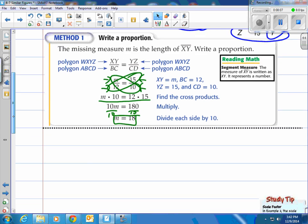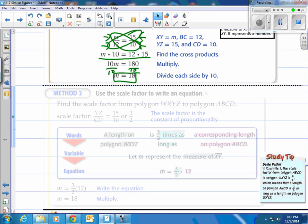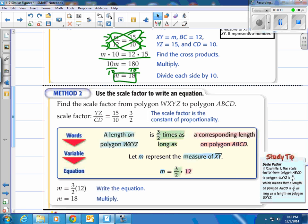Method two is using the scale factor. First, find the scale factor from polygon WXYZ to polygon ABCD. So we start with this on top and this on bottom. So we'll take our YZ, which we know is 15 from the picture, and we'll take our 10, which we know from the picture. Then we'll just reduce it down to 3 over 2 or 1 and a half. That's called the scale factor.